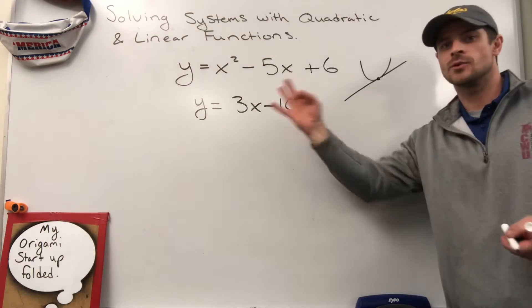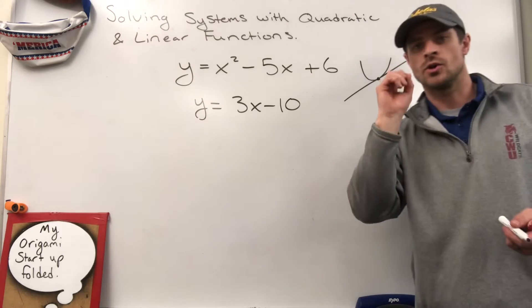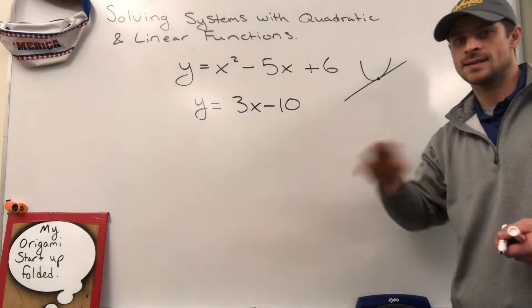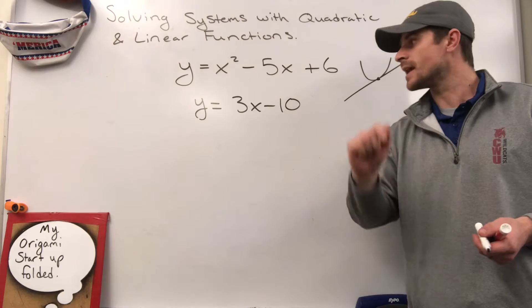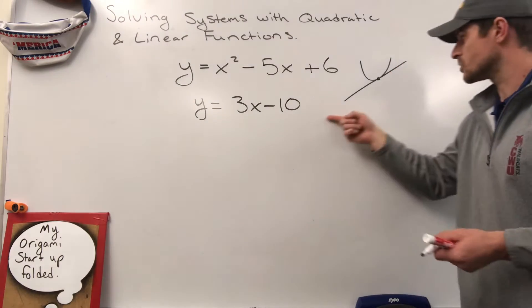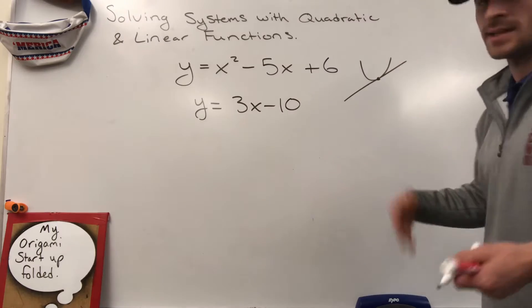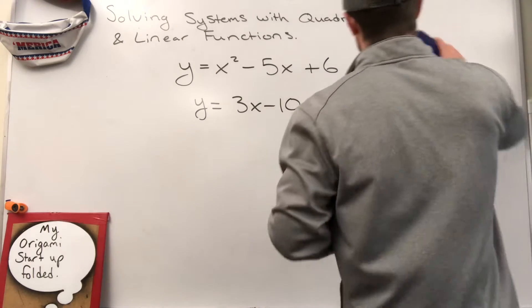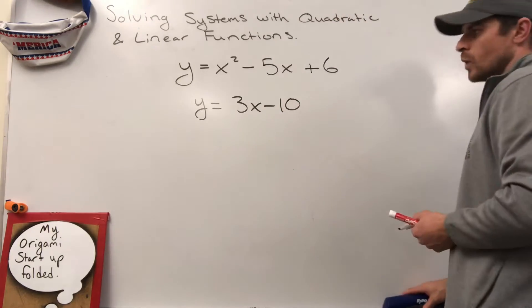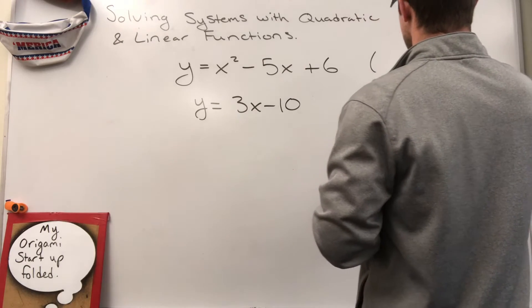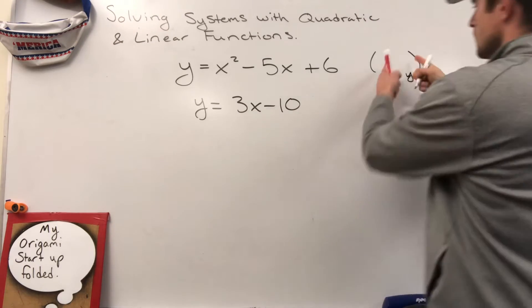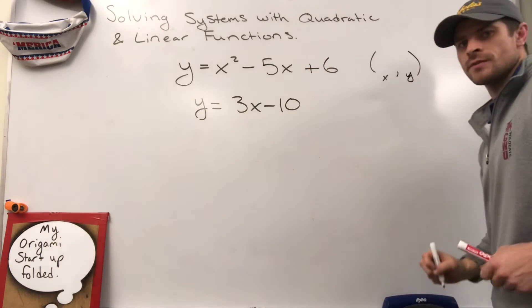So there's three possibilities here with this problem. I could have no solutions where my line never hits my parabola. I could have one solution where it just grazes it, or I could have two solutions where it cuts through it and hits it twice. All right, let's find out what we're working with, and let's figure out what two numbers, x and y, would work for both of these.